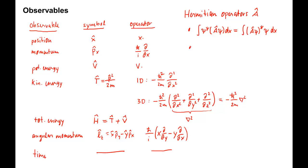The most important property of Hermitian operators is that they have real eigenvalues. This makes intuitive sense since all dynamic quantities like position, momentum, and energy are real numbers and are best represented by real numbers.